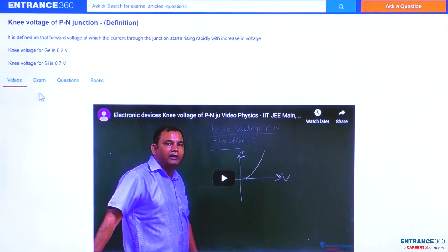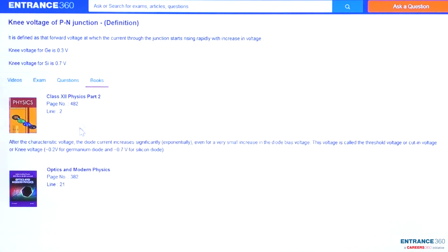And you can go through the books: NCERT 12th Physics Part 2, page number 482, line number 2, and Optics and Modern Physics by DC Pandey, page number 382, line number 21. Thank you.